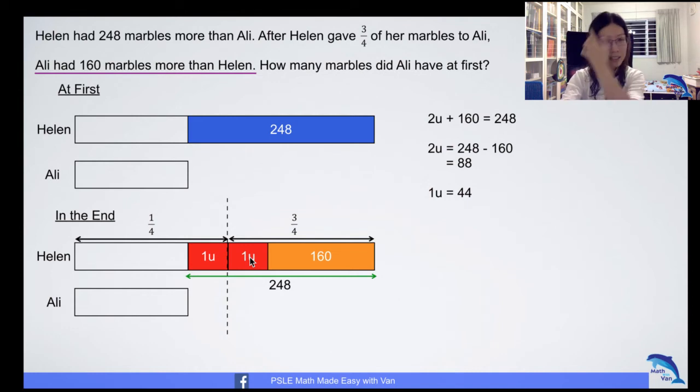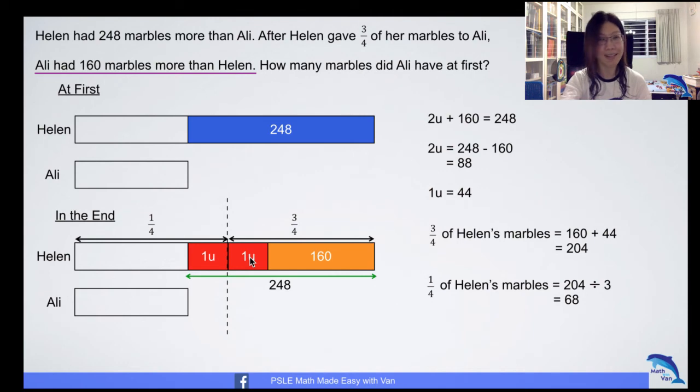So if you know that, then what do you do? Look at the model again. Different from the previous example, in order to calculate the number of marbles Ali had at first, you actually need to work out what is Helen's one quarter and then from there you minus 44. So if we know what is three quarter - remember, three quarter of Helen's marbles is actually one unit plus 160, so three quarter is 204. Then what is one quarter? 204 divided by 3 is 68. Can you see from the model, it's 68 minus your one unit which is 44.